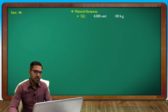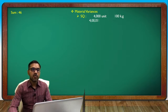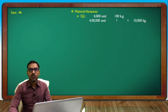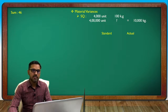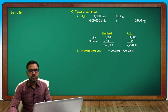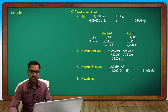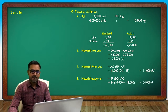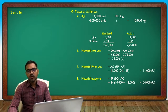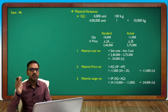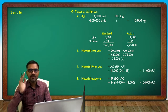Material: standard quantity for 4,000 units = 10,000 kg. Actual quantity = 11,000 kg. Material cost variance = standard cost minus actual cost = (10,000 × 24) minus (11,000 × 25) = 240,000 minus 275,000 = minus 35,000. Material price variance: 11,000 × (24 minus 25) = minus 11,000. Material usage variance: (10,000 minus 11,000) × 24 = minus 24,000.